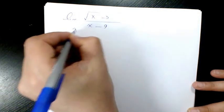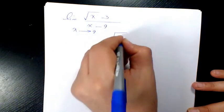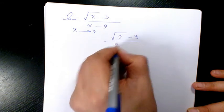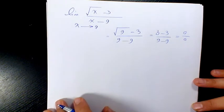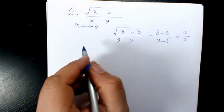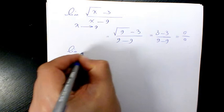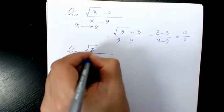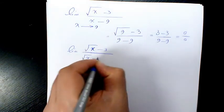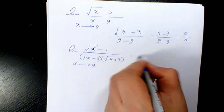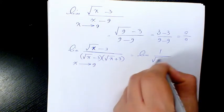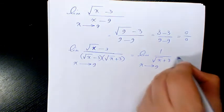Next example: the limit of (square root of x minus 3) over (x minus 9) when x is approaching 9. Substituting gives (3 minus 3) over (9 minus 9), which is 0 over 0. We factor the denominator using difference of squares: (root x minus 3)(root x plus 3). These cancel, giving 1 over (square root of x plus 3), which at x equals 9 is 1 over 6.